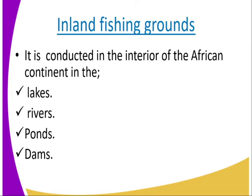There are lakes found in Africa where we can get fish, and there are rivers that give us fish and fisheries. We also have farmers who have reared fish at their homes, creating a conducive environment for fish. We also have artificial dams where fish are kept.